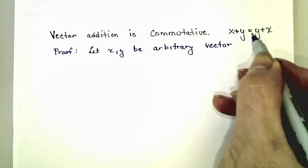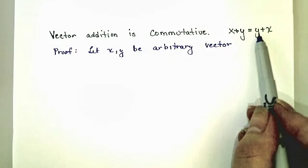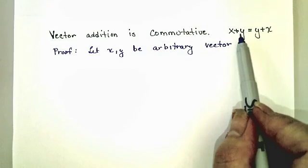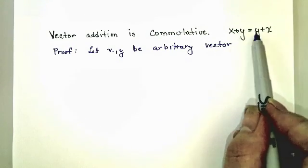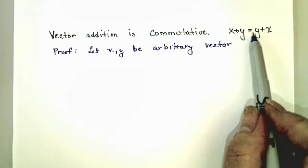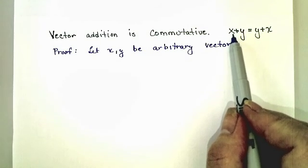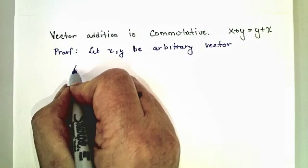And we want to show that any vector x plus y is always y plus x. The way we're going to do this is we're going to start with one of the sides of our equation and show that it's equal to the other side. It really doesn't matter which we start with, but most of the time we start with our left-hand side. So we'll start with x plus y.